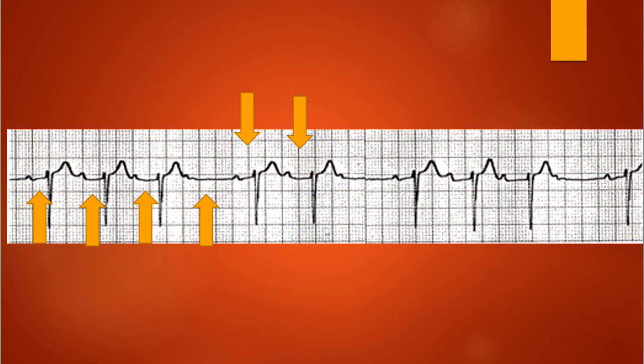And then you drop another complex. So as you can see, they don't have to go in groups of threes before dropping a complex — it can go either way. The criteria is that the PR interval elongates prior to dropping a complex. Thanks for watching.